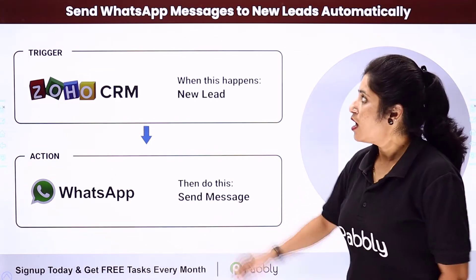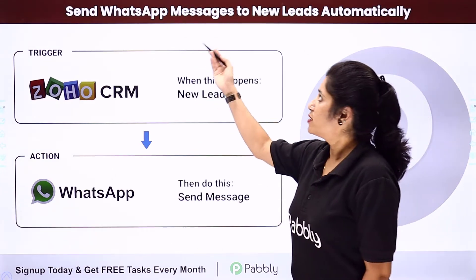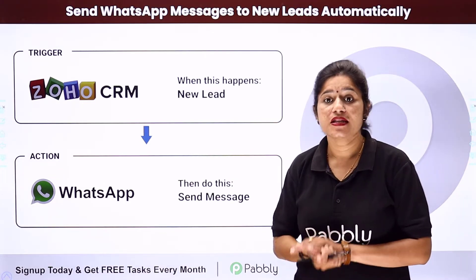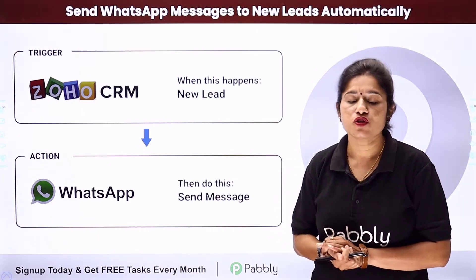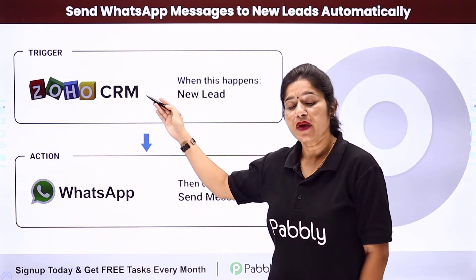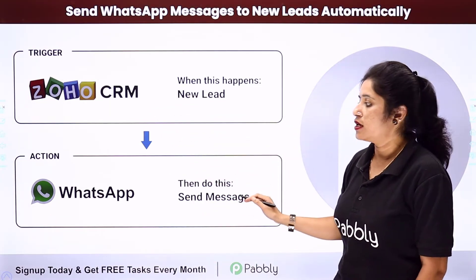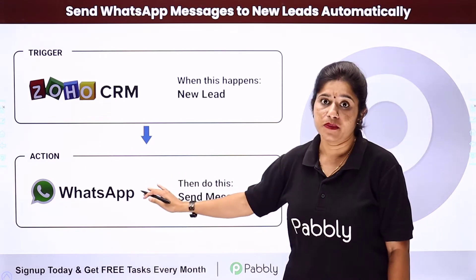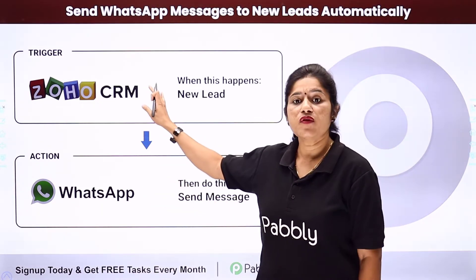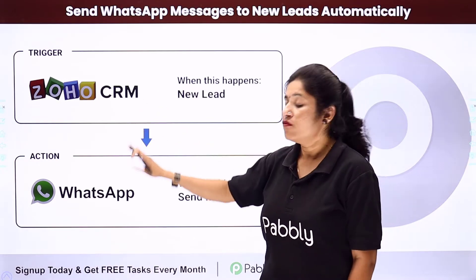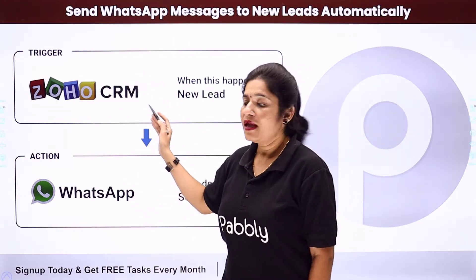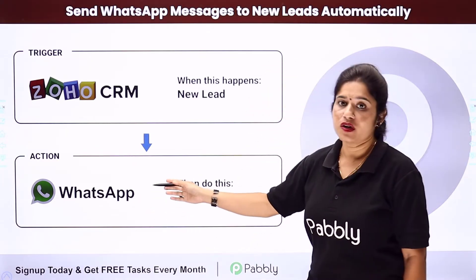In this video we are going to learn how you can send WhatsApp messages to new leads automatically. Whenever you create a new lead into your CRM software application, for example Zoho CRM, automatically a message should be sent to the customer or the lead on the WhatsApp number. For this we need to integrate Zoho CRM with WhatsApp. Your trigger application would be Zoho CRM and your action application would be WhatsApp.